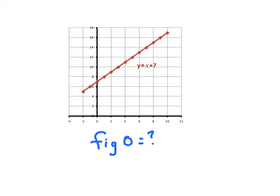Well, if you said 7, you'd be right. Because figure 0 would have 7 tiles right there. And of course, it's shown in the rule, right? It's right there.